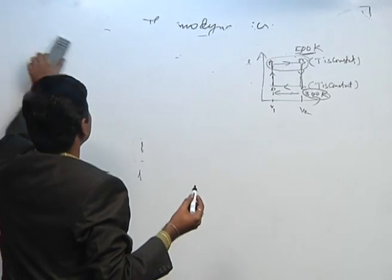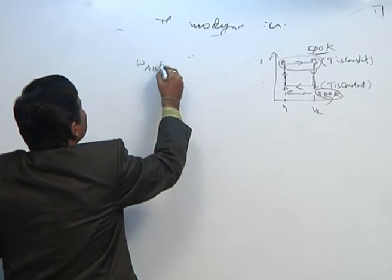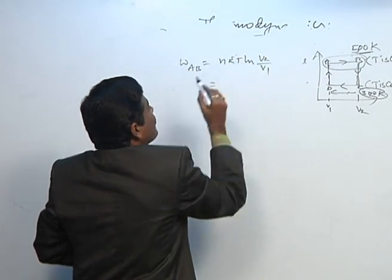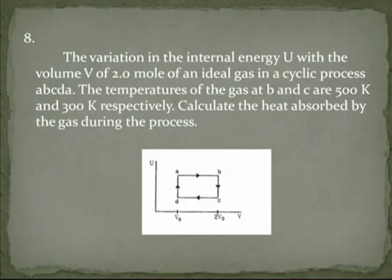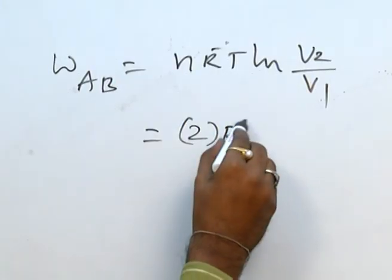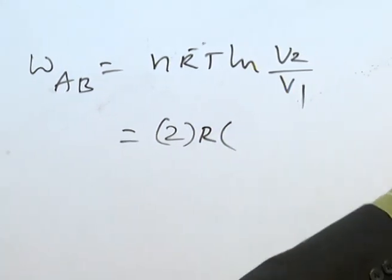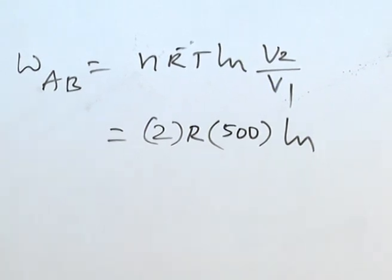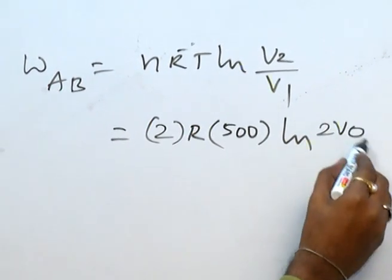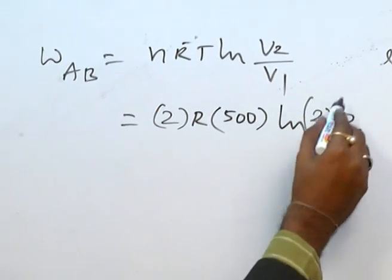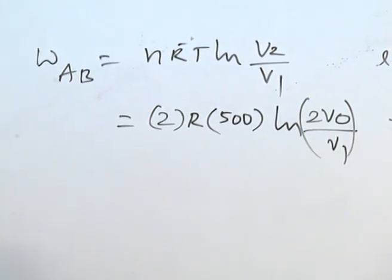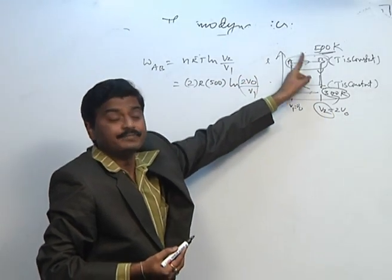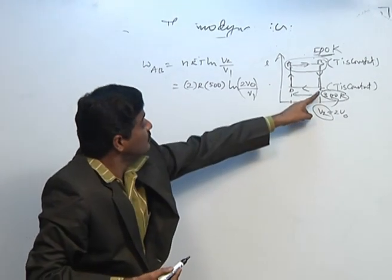The AB process is isothermal. Work done = nRT ln(V2/V1). The number of moles is 2, R is 8.314, temperature for AB is 500 kelvin, and V2 = 2V0, V1 = V0. So work done in AB = 2 × 8.314 × 500 × ln(2V0/V0).